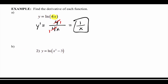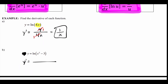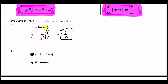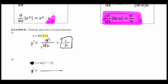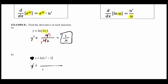For y = ln(x² - 3): whatever is inside goes on the bottom, so x² - 3 goes on the bottom. The derivative of that goes on top — the derivative is 2x. So y' = 2x over (x² - 3). This one you're done because you can't simplify any further.